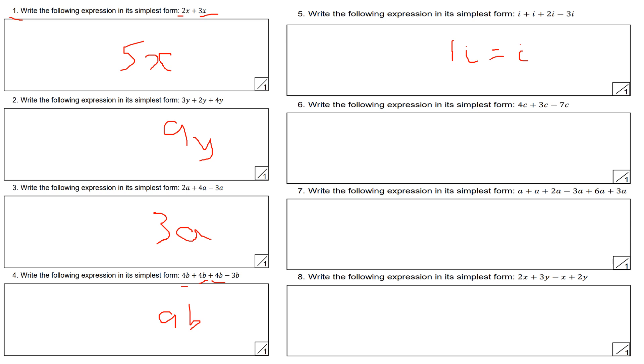Question number 6, write the following expression in simplest form: 4c plus 3c minus 7c. 4c plus 3c is 7c, then 7c take away 7c equals 0. Think about it as I've got seven pounds and I've spent seven pounds, I now have nothing left. Nothing being zero in this context.